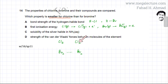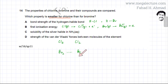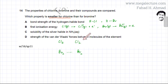Van der Waals forces depend on the size of the molecule. Bromine has more electrons, so the temporary dipole-induced dipoles formed are bigger. When more electrons fluctuate from side to side, the partial charges formed in bromine are much greater. Chlorine has fewer electrons, so its van der Waals forces are much weaker compared to bromine. Therefore, this property is smaller for chlorine — option D is correct.